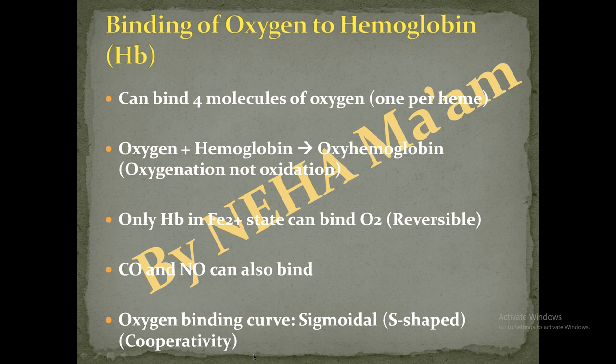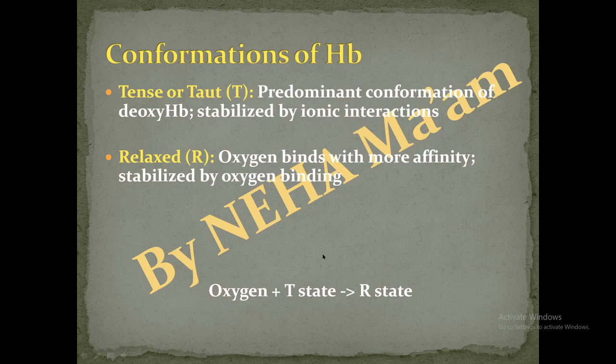Hemoglobin exists in two conformations. First is T (tense) conformation, and the other is R (relaxed) conformation. They can interconvert between these two states. The T state is predominant in deoxyhemoglobin, and it is stabilized by ionic interactions. The R state binds oxygen with higher affinity and is stabilized by oxygen binding. When oxygen binds to the T state, it shifts to the R state, which explains cooperativity.